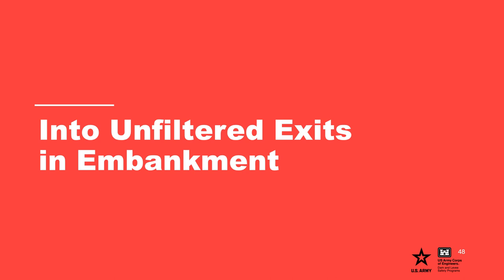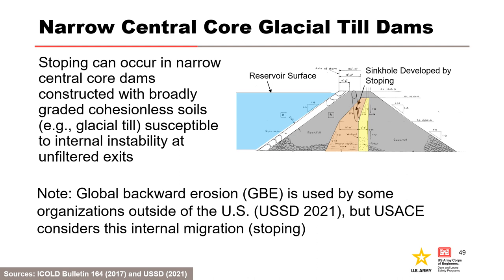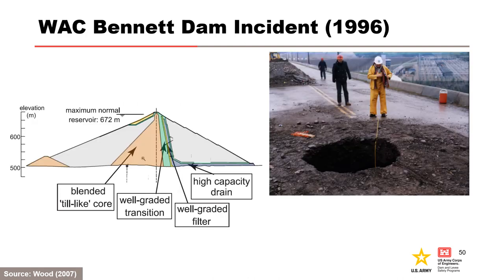To wrap up, a few slides on internal migration into unfiltered exits within the embankment. Stoping can occur in narrow or reasonably wide sloping or partially sloping central core dams constructed with broadly graded cohesionless soils susceptible to internal instability, if not properly protected by filters or a transition zone. Voids develop at the interface with the unfiltered exit and grow or stope upward and backward sub-vertically as erosion continues. Global backward erosion (GBE) is used by some organizations outside of the U.S., but the USACE considers this process to be internal migration. BC Hydro's WAC Bennett Dam in British Columbia is a case history of internal instability leading to stoping and sinkholes, discussed in more detail in the internal instability presentation.